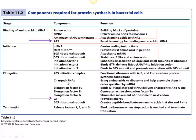Charged tRNAs means tRNAs that are carrying their correct amino acids — if a tRNA is carrying an amino acid it's called charged; if it's not carrying an amino acid it's called uncharged. Elongation factors are again just proteins that help with the process. GTP provides energy just like ATP. Those are your basic requirements for translation.